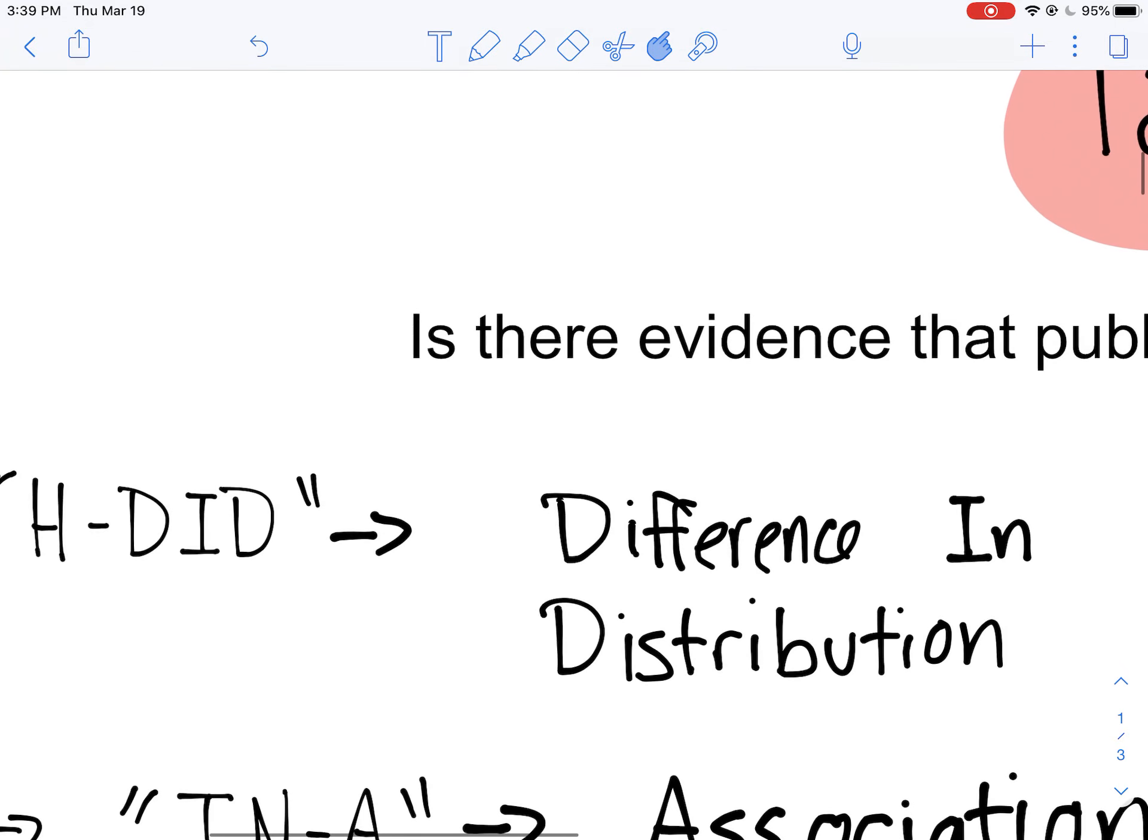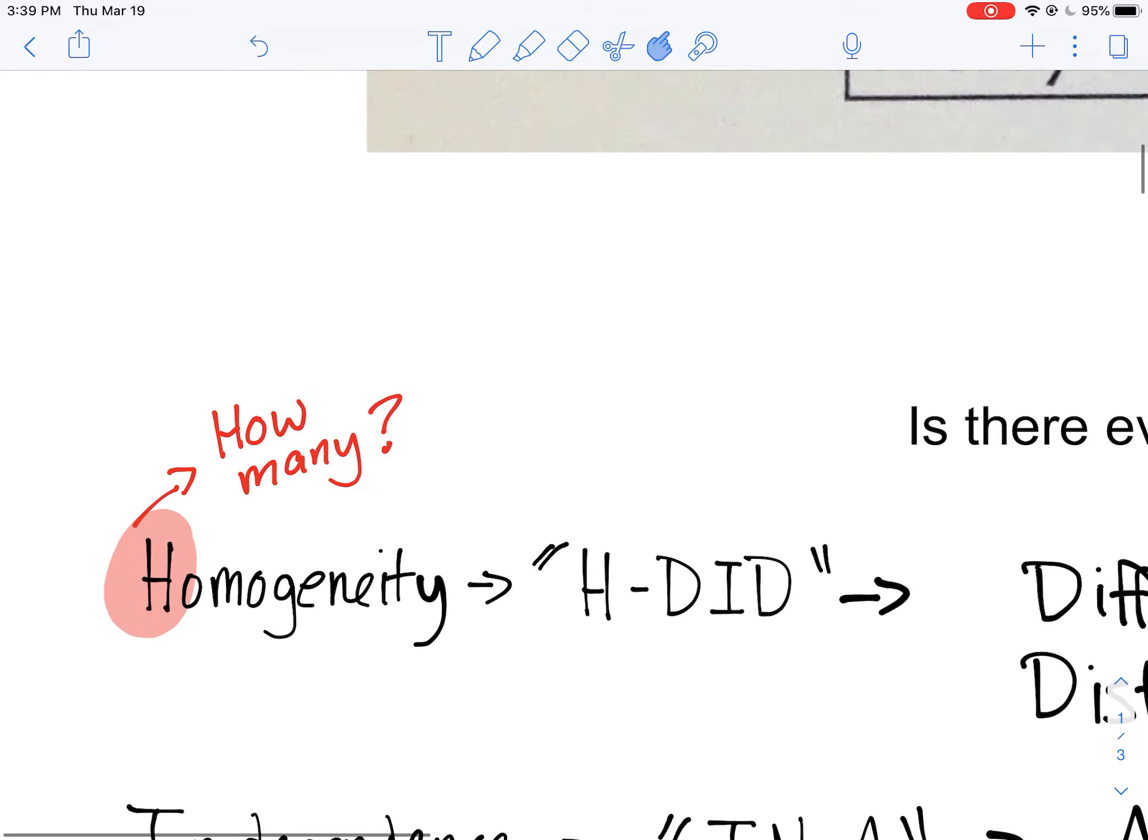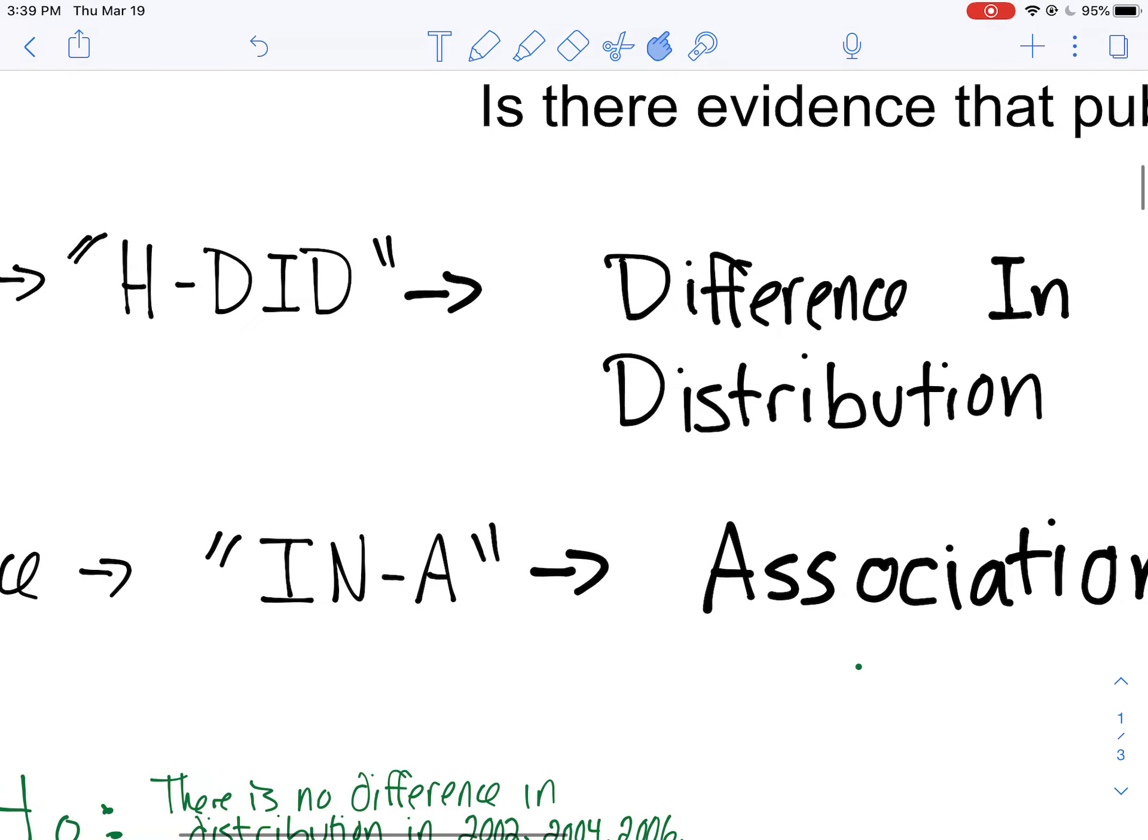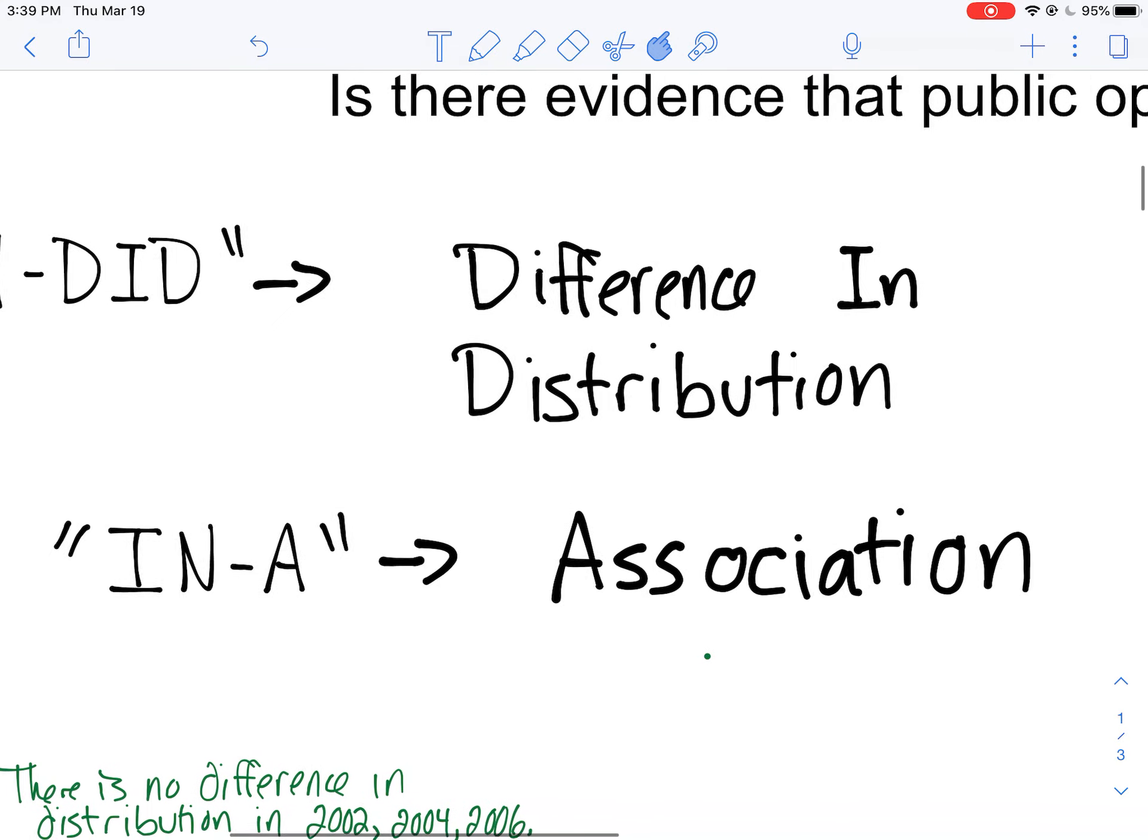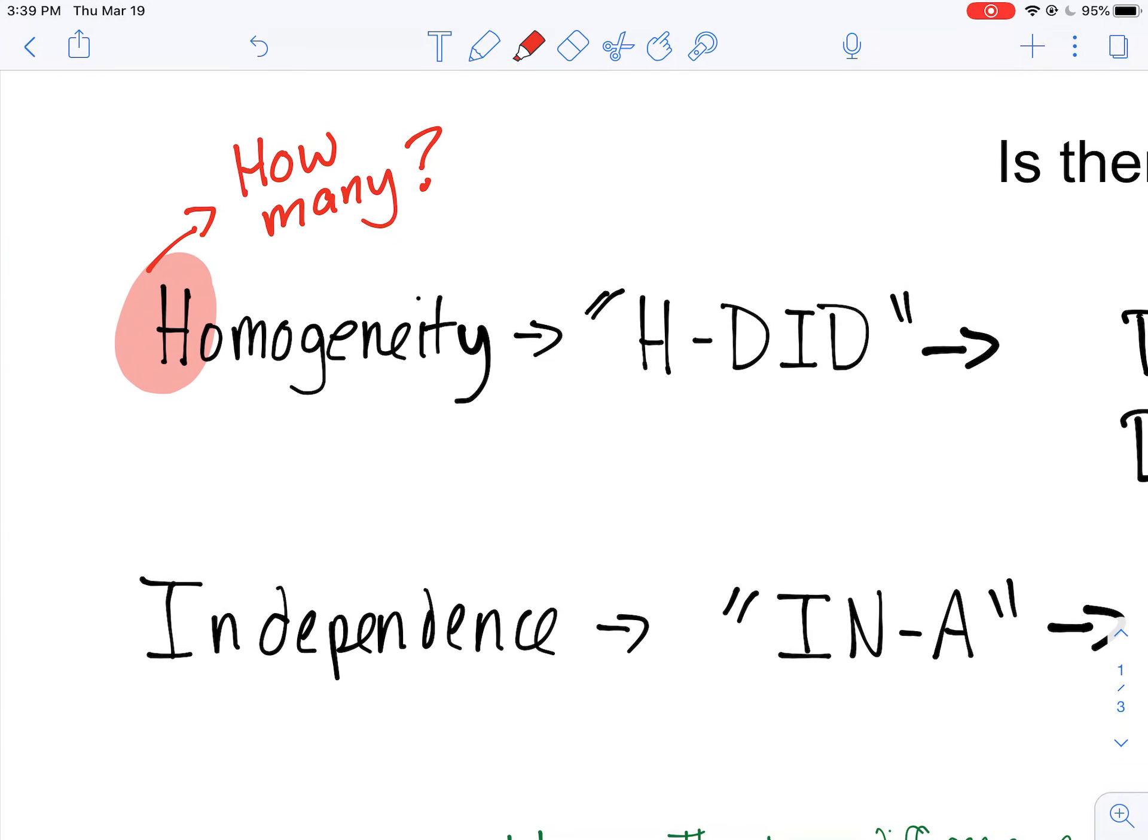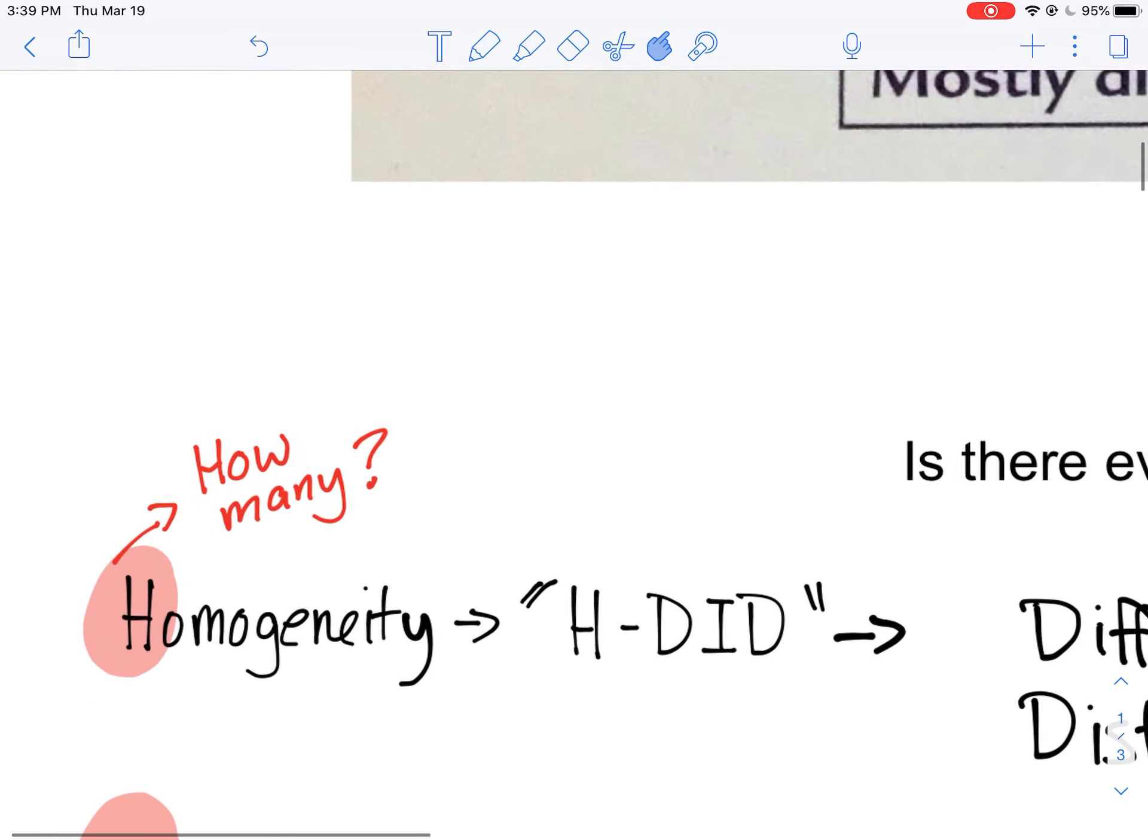What does that mean? H means difference in distribution, so that's what my null hypothesis would look like. I remember that H being for how many, too, meaning that we're dealing with more than one sample or more than one population if it's homogeneity. For independence, IN-A, that's how I remember it because IN for independence and then that means I'm testing for an association. In independence, I think of individual, it's one sample that you're dealing with and then maybe you're breaking it up into categories.